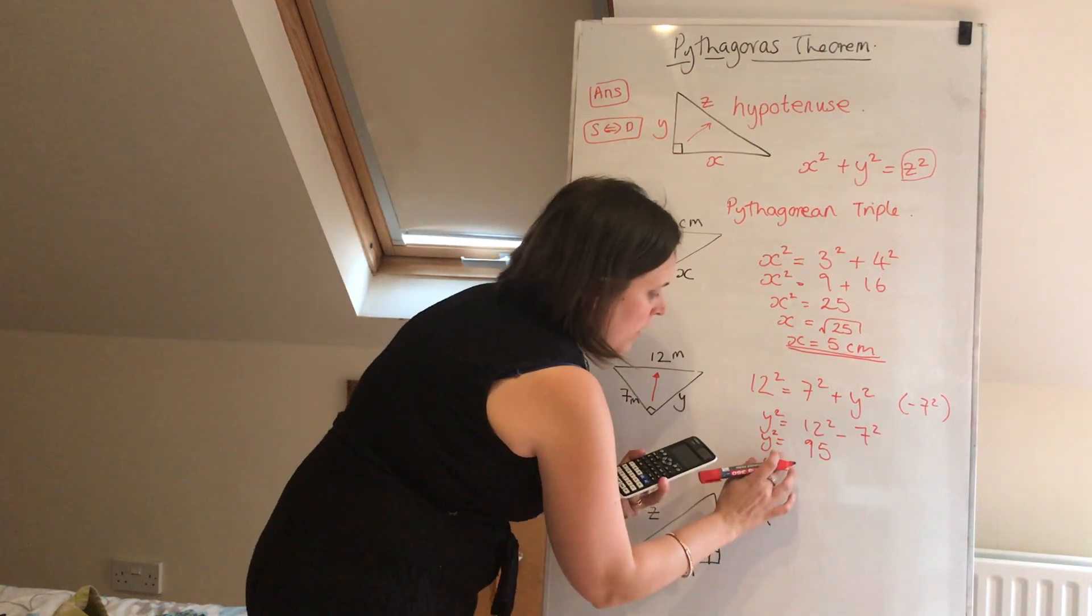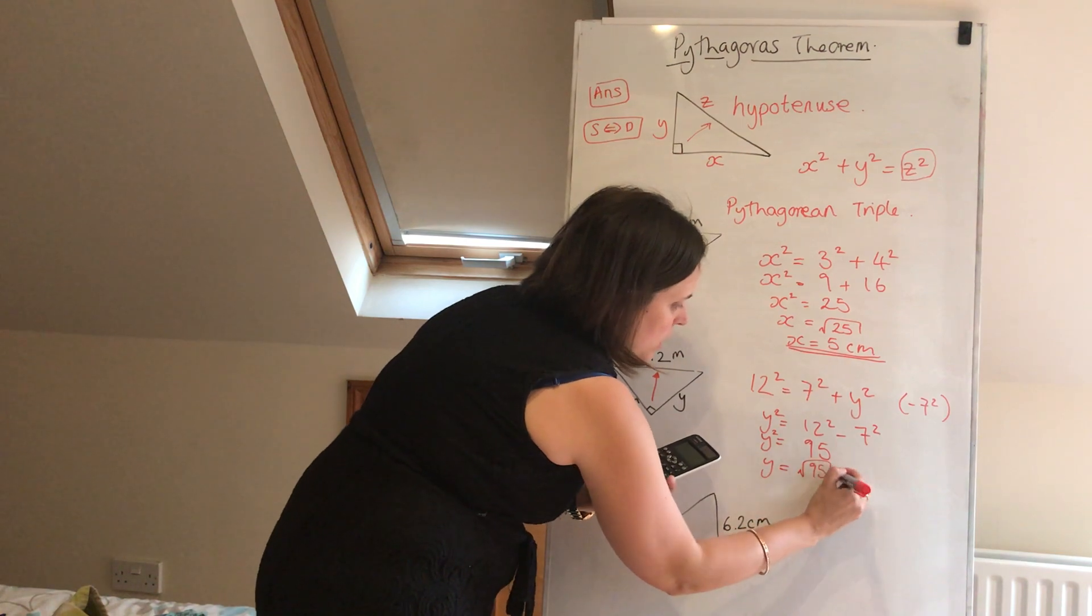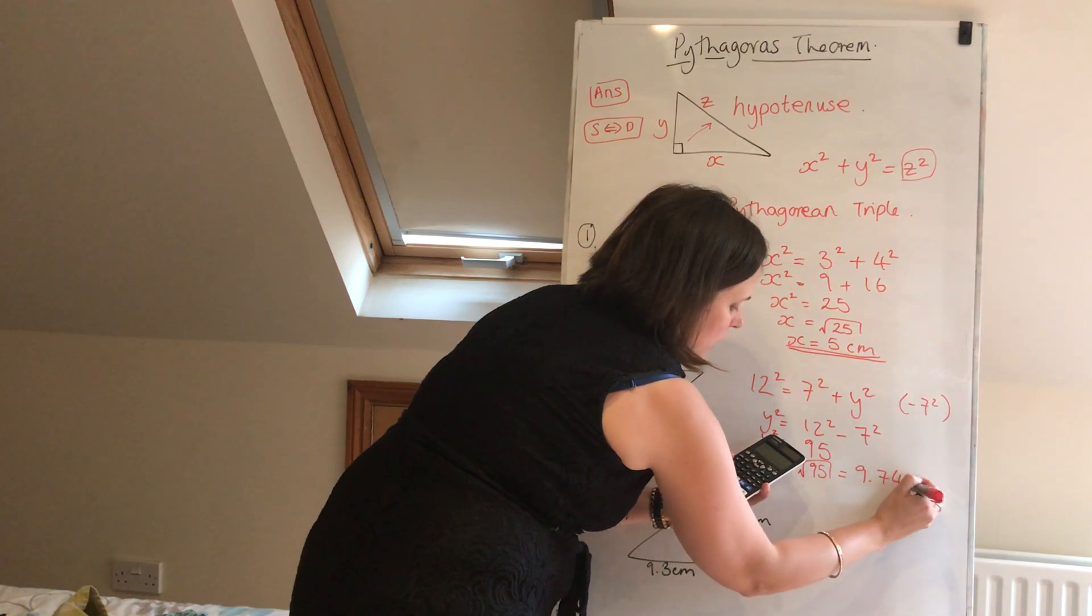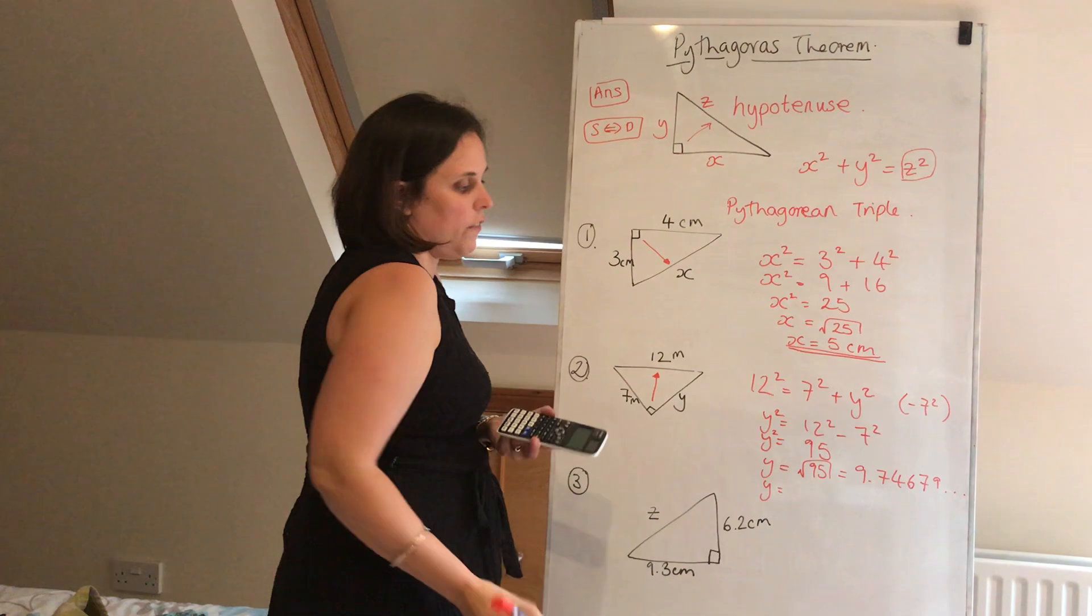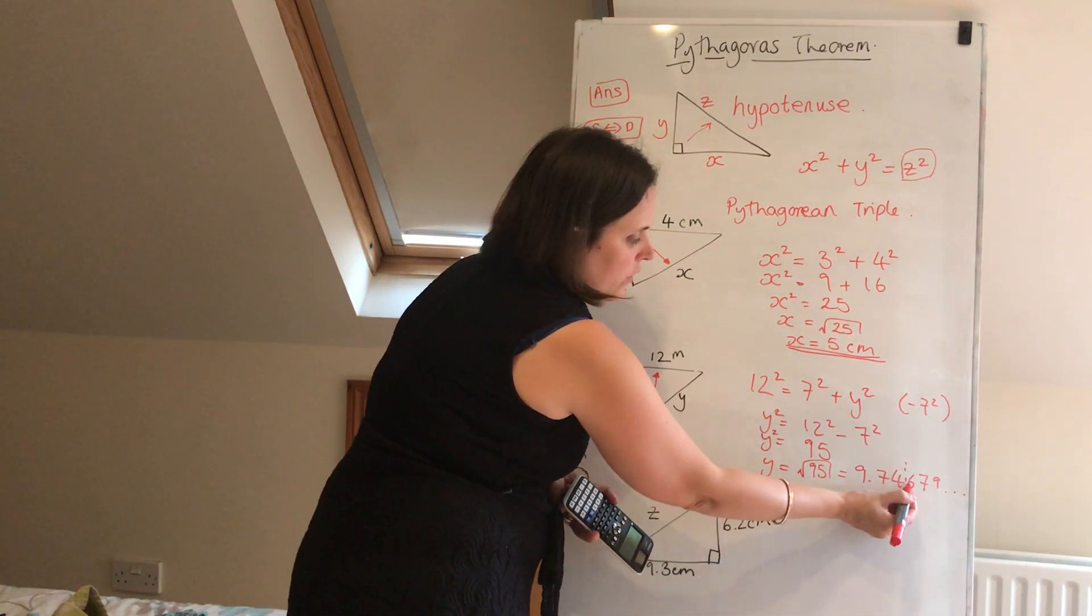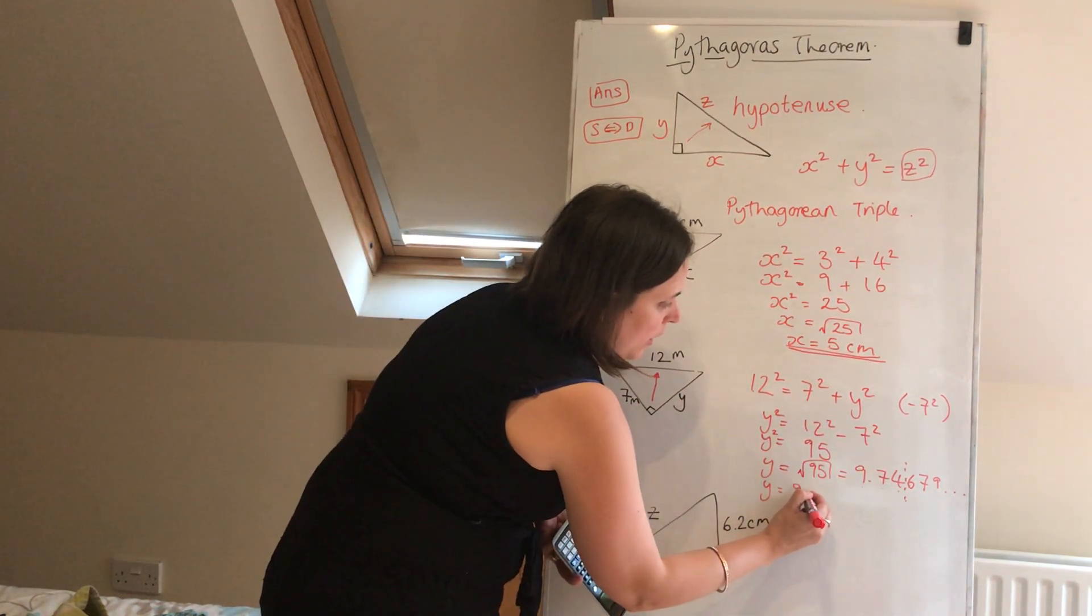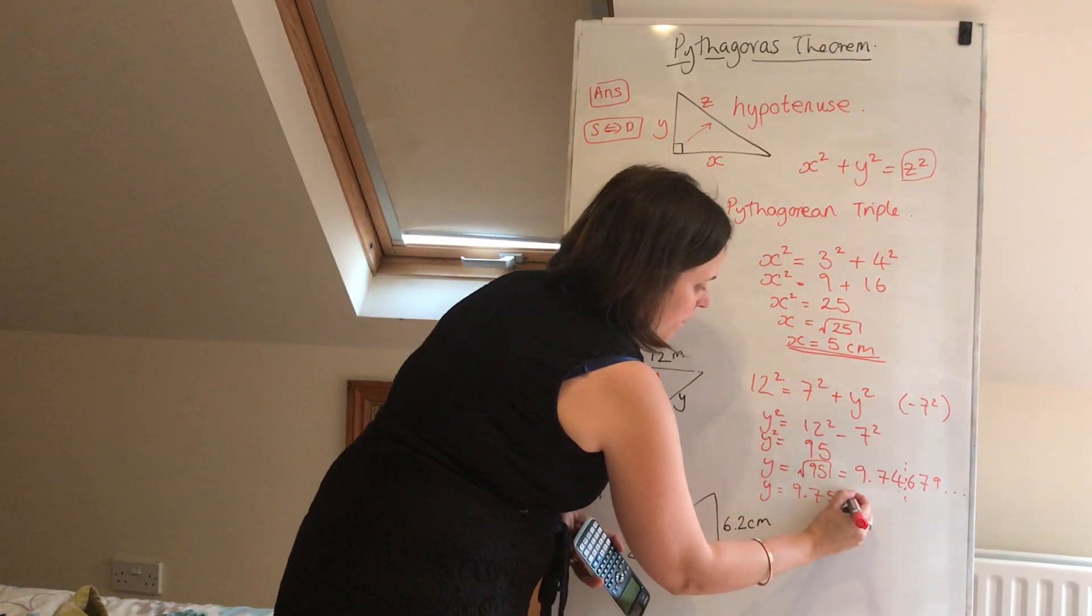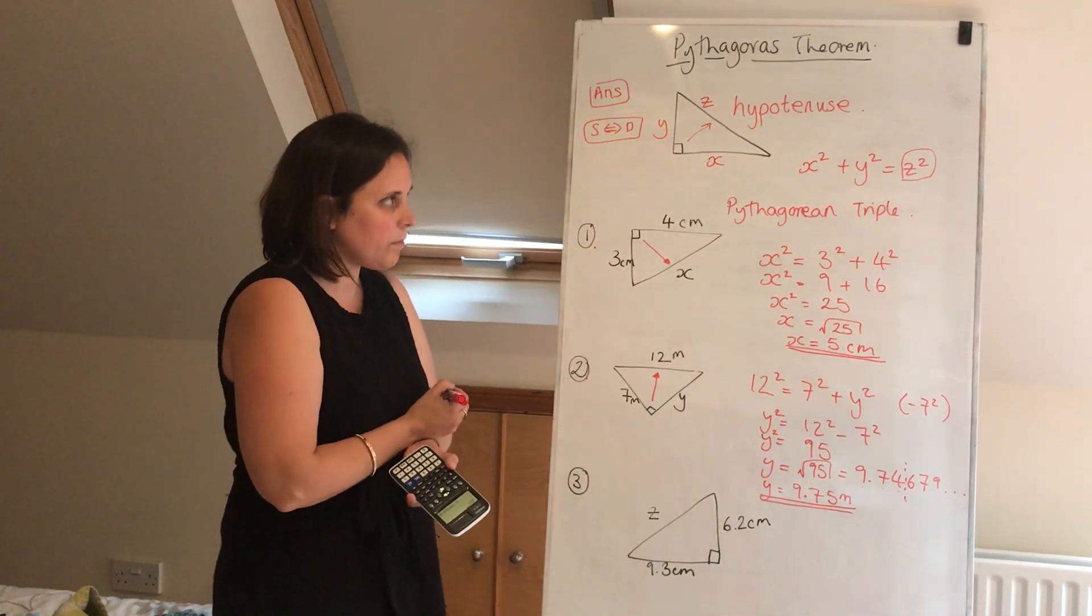Now I'm going to give my answer to three significant figures. That means I want three digits. Y is equal to the square root of 95, which is 9.74679... So if I want three significant figures, I count three digits: one, two, three. There's my cutoff. That's six rounds the seven, the four up to five. And I get 9.75, and in this case, it was meters. And there's my answer.